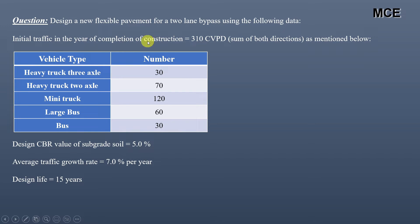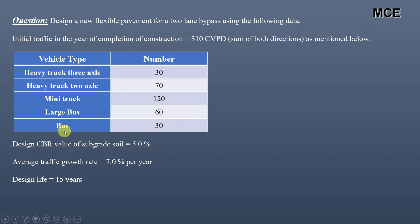Initial traffic in the year of completion of construction is 310 commercial vehicles per day — the sum of both directions. Vehicle-wise details: Heavy Truck 3 Axles: 30, Heavy Truck 2 Axles: 70, Mini Trucks: 120, Large Bus: 60, and Bus: 30. Design CBR value of the subgrade is 5%, average traffic growth rate is 7% per year, and design life is 15 years.